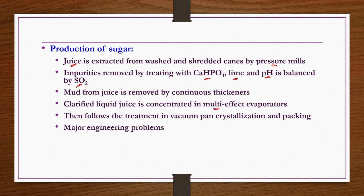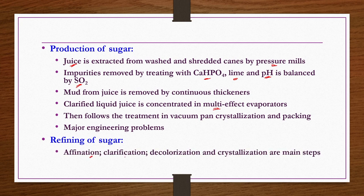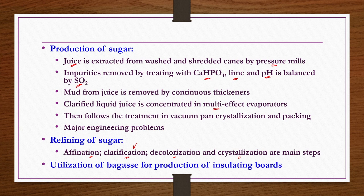We also discussed the major engineering problems of the sugar industries. The sugar produced by the extraction method may have impurities or molasses attached as a layer on the sugar crystal, so refining of sugar may be required. We discussed the refining process, in which affination, clarification, decoloration, and crystallization steps are the primary ones. Clarification may be mechanical or chemical. We also discussed utilization of bagasse for the production of insulating boards. That is all we discussed in the last couple of lectures on carbohydrate industries.